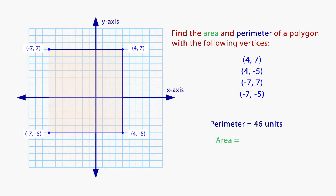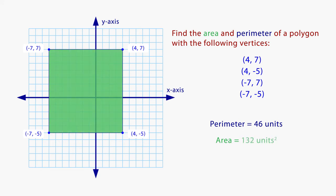To find the area, we can count the number of square units that make up the shape. The area is 132 square units.